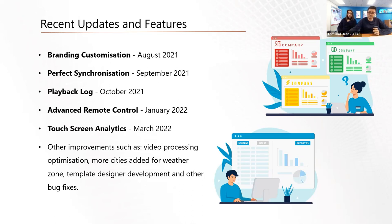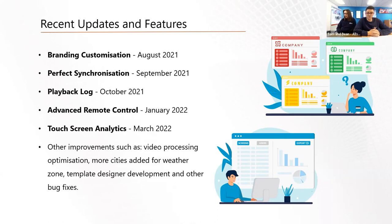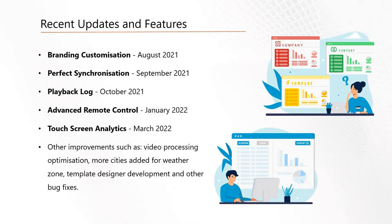The next feature was a playback log, launched in October last year. We previously had a very basic version; now you can export daily reports showing how many times a particular piece of media has been displayed, the total duration in seconds, and more — very important for advertising projects. After that, advanced remote control was added. Users could always stop and play content and format internal memory, but we added changing orientation, time and date settings, and configuring synchronization settings remotely. As long as the screen's online, you've got full remote control.